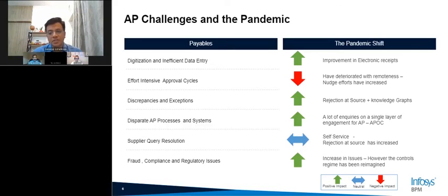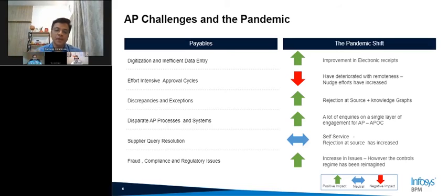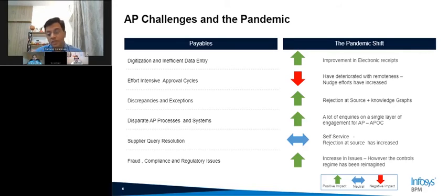The third big problem is disparate AP processes. Three out of four customers we deal with have more than one ERP instance or multiple purchasing systems. Compound that with regional, geo, and business unit nuances, and you have very disparate processes. However, in the last two years we've seen a sizable improvement — more conversions and implementations around a single AP system like APOC that straddles this diverse heterogeneous landscape. We're seeing a lot more adoption of technology to solve this heterogeneous problem.